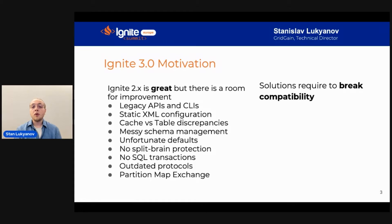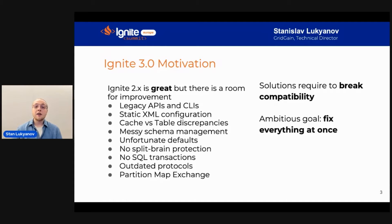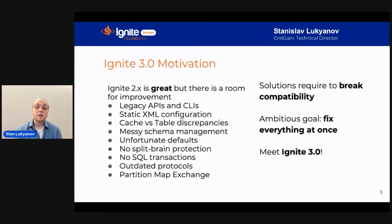All of the solutions to these problems basically require breaking compatibility with previous versions, meaning introducing a major release. And if we want to break compatibility, then why not fix as many things as we can in one release so that we don't need to break compatibility multiple times? And hence, Ignite 3 — the ambitious project of solving many Apache Ignite 2 existing problems.